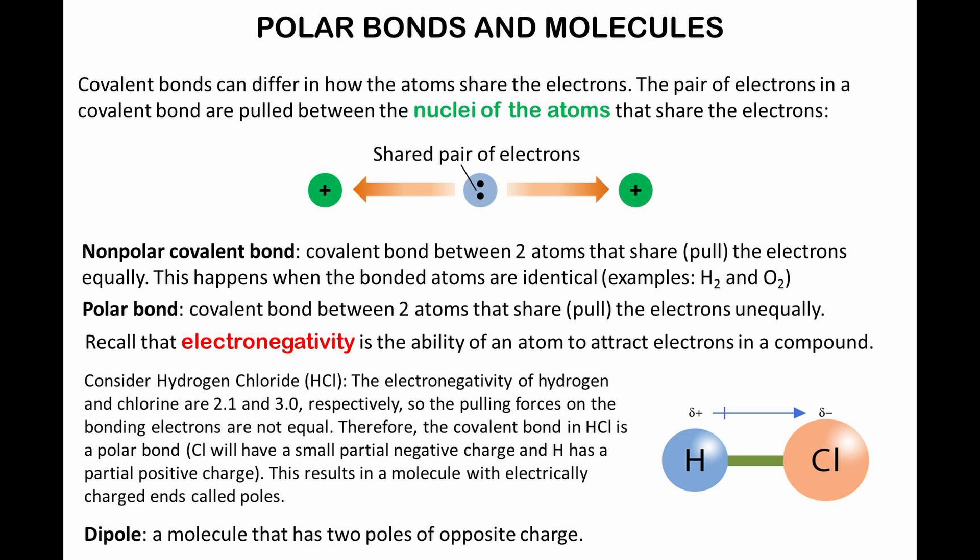A polar bond is a covalent bond between two atoms that pull the electrons unequally. It's kind of an electron tug-of-war. The ability of an atom to attract electrons is quantified by its electronegativity value. Consider hydrogen chloride. The electronegativity of hydrogen and chlorine are 2.1 and 3.0, respectively. Consequently, the pulling forces on the bonding electrons are not equal. Therefore, the covalent bond in hydrogen chloride is a polar bond. The chlorine atom will have a small partial negative charge and the hydrogen atom has a partial positive charge. That's why hydrogen chloride is a dipole, which is a molecule that has two electrically charged ends called poles.